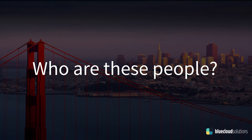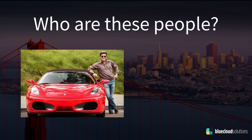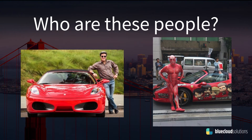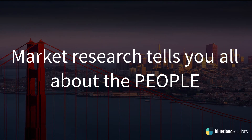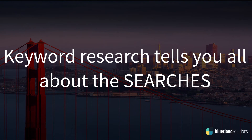The reason you want to do this is because we often have assumptions. You might assume a Ferrari owner is a 50-year-old guy, bachelor lifestyle, loves fast cars — but when you do the research you might find something completely different. Market research tells you all about the people interested in one thing, whereas keyword research tells you about what people are searching for in the app store. That difference is huge: market research is about people, keyword research is about app store searches.